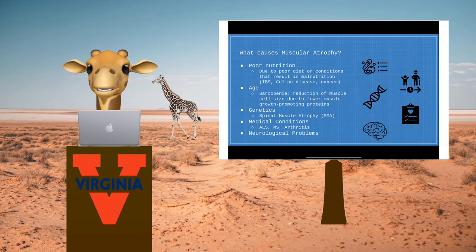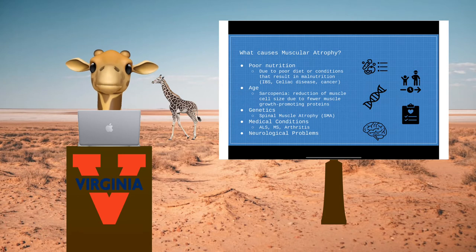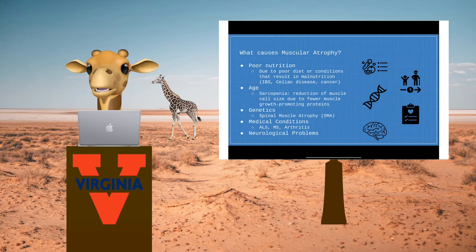Muscular atrophy has a variety of pathological causes as well. Poor nutrition can prevent muscles from growing, and muscular atrophy can develop due to poor diet choices or conditions that result in malnutrition. Muscular atrophy also naturally occurs with age, which is called sarcopenia.